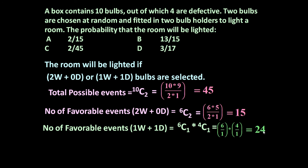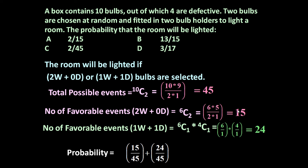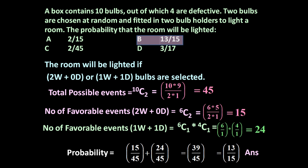So the required probability is given by favorable events divided by total events. Probability of selecting 2 working bulbs is 15 upon 45, and probability of selecting 1 working and 1 defective bulb is 24 upon 45. This gives 39 upon 45. If we further simplify it, it becomes 13 upon 15. So the answer is B: 13 upon 15.